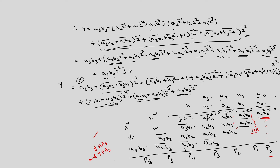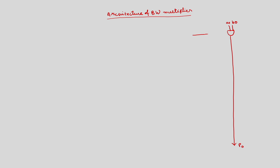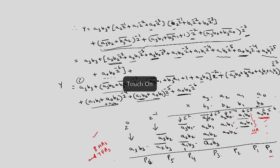To generate P1 we require a half adder whose inputs are A1·B0 and A0·B1. This is a half adder with inputs A0·B1 and A1·B0. The product terms can be generated using AND gates again. For the half adder we have two inputs and two outputs — sum and carry. The sum bit will act as P1, and the carry bit we are going to add in the subsequent stage.